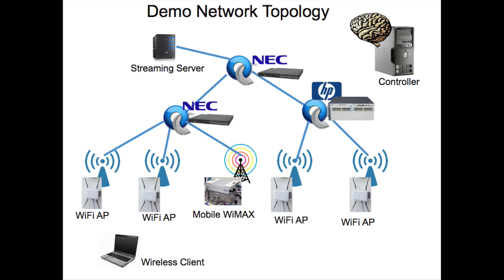Here is a network topology for the demonstration, consisting of multiple OpenFlow switches, Wi-Fi APs, and a WiMAX base station. These devices are controlled by a central controller, where TriCasting is implemented. Here we will be streaming a video from the server to a wireless client with multiple wireless interfaces.